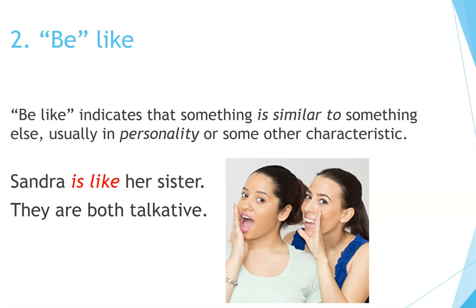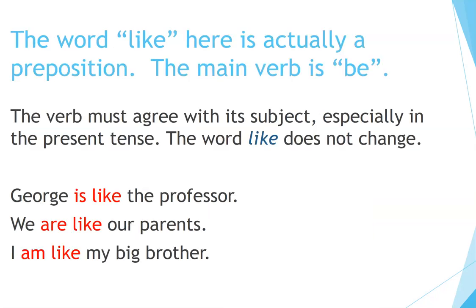Number two: Be like. Be like indicates that something is similar to something else, usually in personality or some other characteristic. Sarah is like her sister — they are both talkative. The word like here is actually a preposition; the main verb is be. The verb must agree with its subject, especially in the present tense, while the word like does not change. For example: George is like the professor. We are like our parents. I am like my big brother.